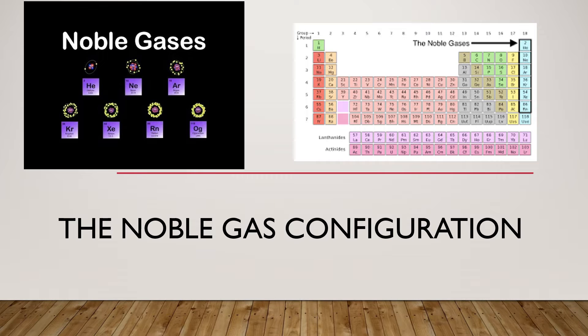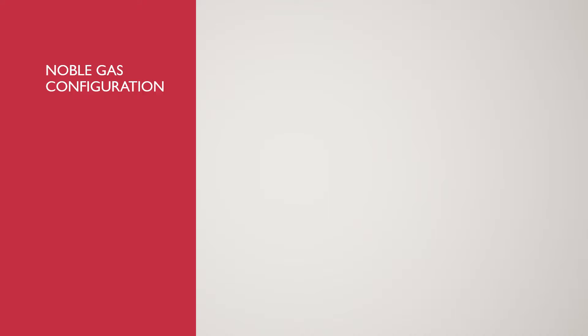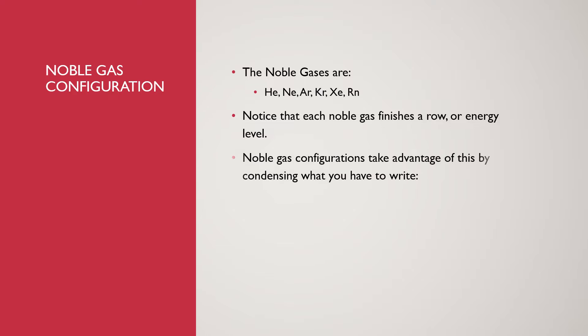The noble gases are over here. They are group 18 on the periodic table, at the end of the rows. Your noble gases are helium, neon, argon, krypton, xenon, and radon. They each finish a row or an energy level on the periodic table.